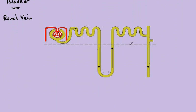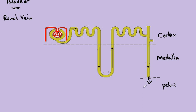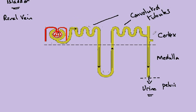Looking at the detailed diagram of the nephron: above the dotted line is the cortex, and below the dotted line is the medulla. At the very end of the tube is the pelvic region, from which the urine emerges. The tube is made up of twisted sections called the convoluted tubules. This tube here is known as the collecting duct — a duct, D-U-C-T, is a tube.